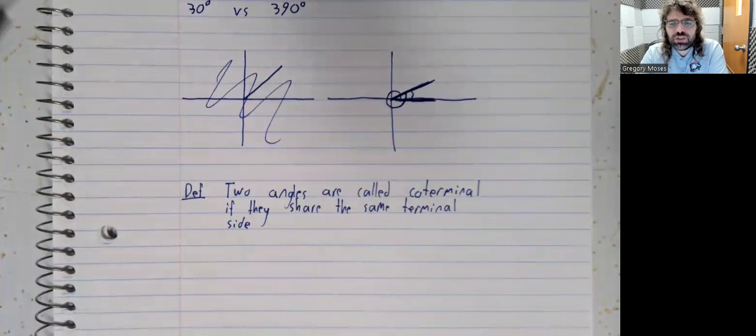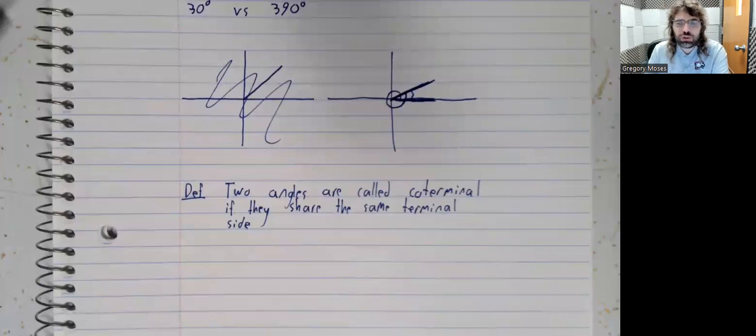This is going to be very useful in trigonometry because it's going to mean that often we can work with small angles instead of large angles. And just from personal experience, working with smaller numbers is usually going to be easier than working with large numbers.